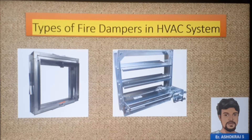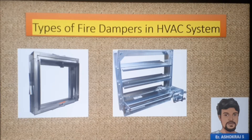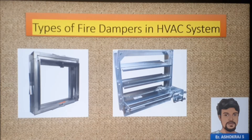Whether you are sending air through a supply duct or a ductless system, if you have only one air conditioning system feeding four or five rooms, there is a chance that fire in one room will spread to another room. To control that fire spreading from one room to another, we use fire dampers in the duct, return dampers, or supply dampers.